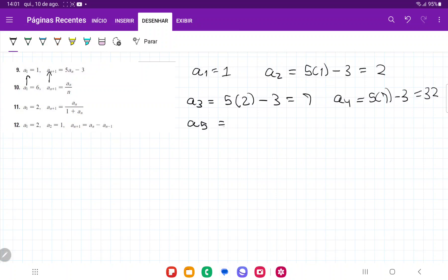And lastly, a5 is going to be 5 times the previous one, so 5 times a4, 5 times 32 minus 3, and that is going to give us 157.